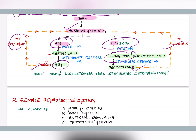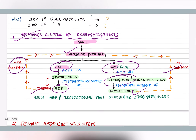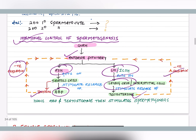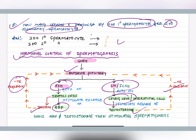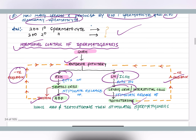This is all about the male reproductive system. We studied scrotum, testis, duct system, accessory glands, spermatogenesis, structure of sperms, and hormonal control of spermatogenesis. A question for you: how many sperms are produced by 200 primary spermatocytes and 200 secondary spermatocytes?